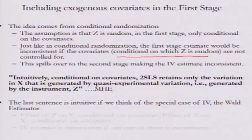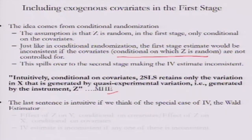There is a nice summarization of this point in the 'Mostly Harmless Econometrics' book by Angrist and Pischke. They say: intuitively, conditional on covariates, the two SLS estimation retains only the variation in x that is generated by quasi-experimental variation — that is, generated by the instrument Z. We will understand this even better when we talk about standard errors in IV estimation.